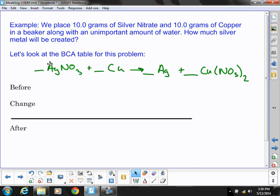And then we need to balance that reaction. And in order to balance it, we're going to need two of the silver nitrates and two silvers. And then we have one copper and one copper 2 nitrate. So we start there.